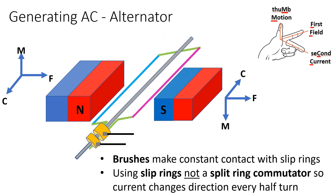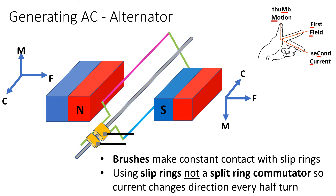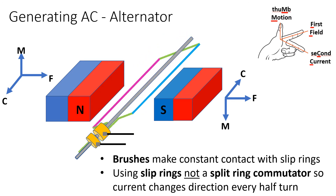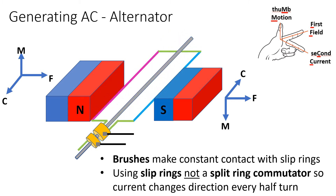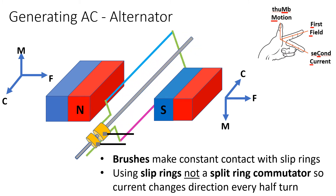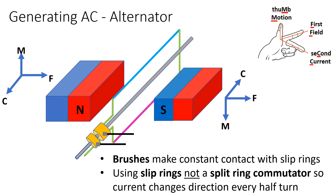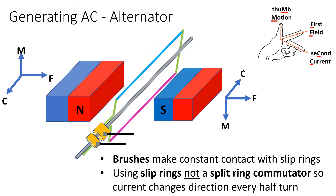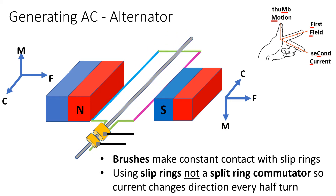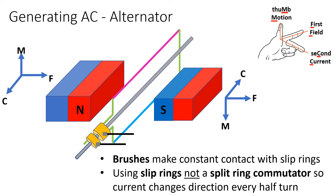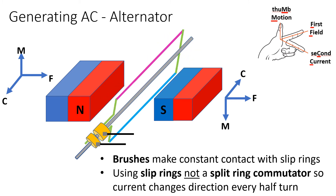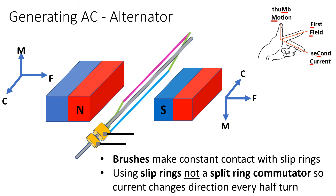The two separate slip rings mean that the blue wire and the pink end of the coil are always connected to their particular slip ring. The blue side is slightly shorter and is connected to the larger of the two slip rings, and the smaller slip ring has the pink side of the coil making contact with it. Remember that there are carbon brushes making contact with the slip rings.